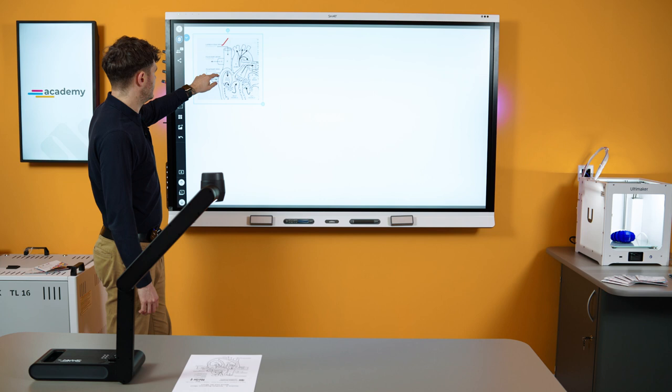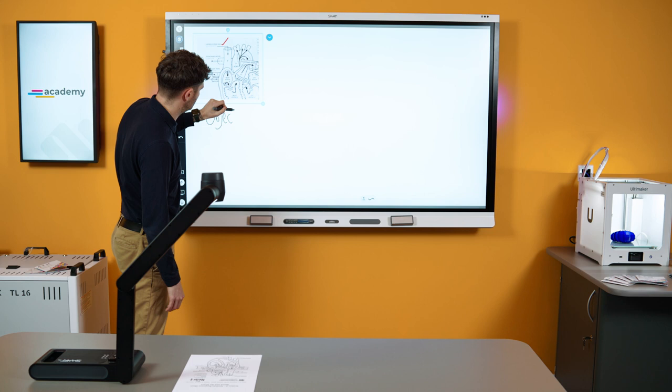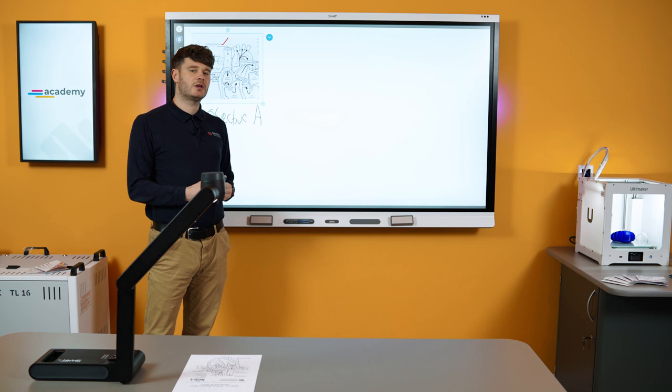So we can actually pop this one in the top left-hand corner. We could say that this is objective A from our success criteria, as an example. Then we can go back into using the visualiser.